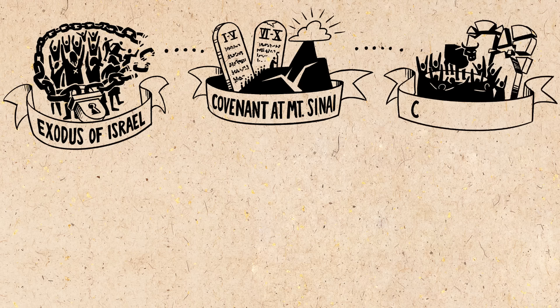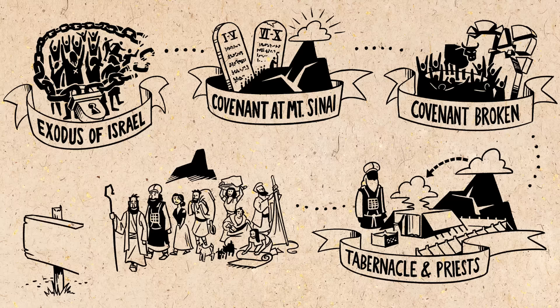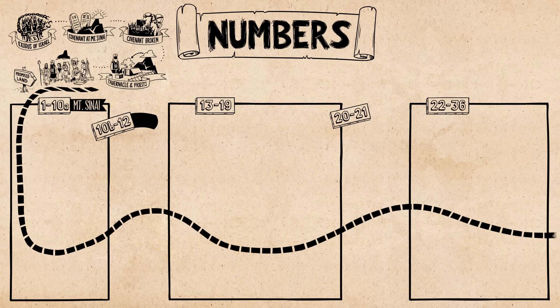The Book of Numbers. This fourth book of the Bible carries forward the story of Israel after their exodus from slavery in Egypt. God had brought them to Mount Sinai and entered into a covenant with them there. And despite Israel's rebellion, God had graciously provided a way for Israel to live near his holy presence in the tabernacle. So the Book of Numbers begins as Israel wraps up their one-year stay at Mount Sinai and they head out into the wilderness on their way to the land that God promised Abraham.